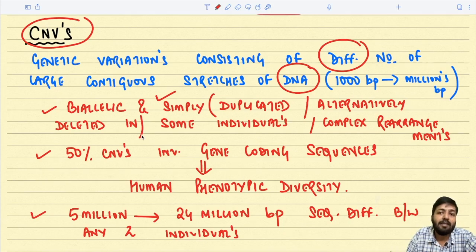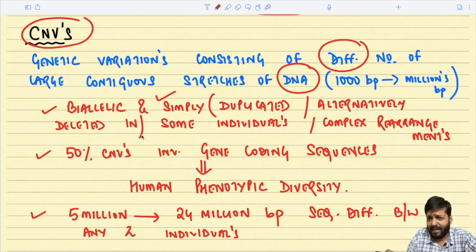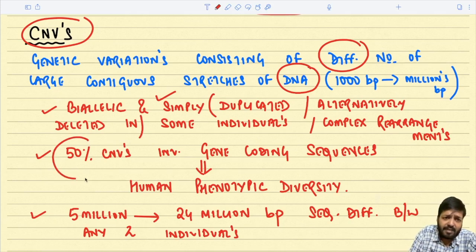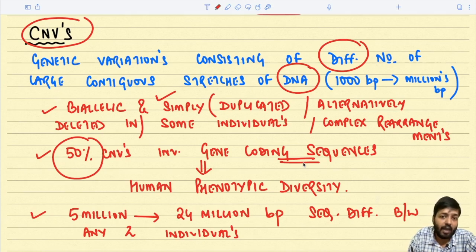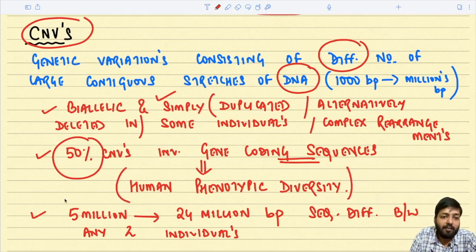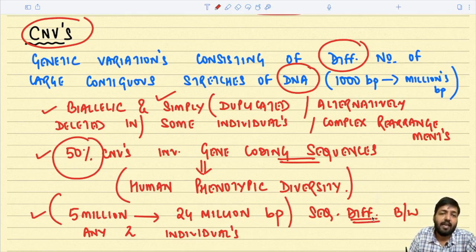Copy number variations are again bi-allelic and they might be simply duplicated or alternatively deleted in some individuals, or there might be complex rearrangements. Fifty percent of copy number variations involve gene coding sequences — compared to only 1 percent for SNPs. Around 5 million to 24 million base pair sequence differences exist between any two individuals.